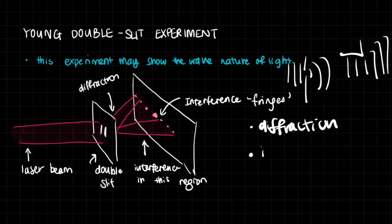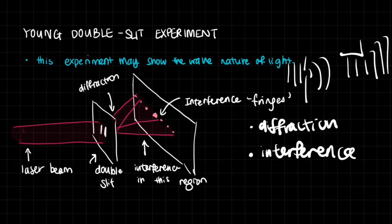Then we have interference. Interference is basically where two waves meet at a point, and their individual amplitudes are algebraically added together to make the amplitude of the resultant wave. We were able to show that light exhibits both of these actions using this experiment.